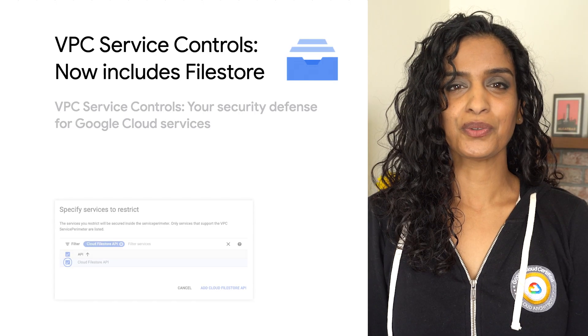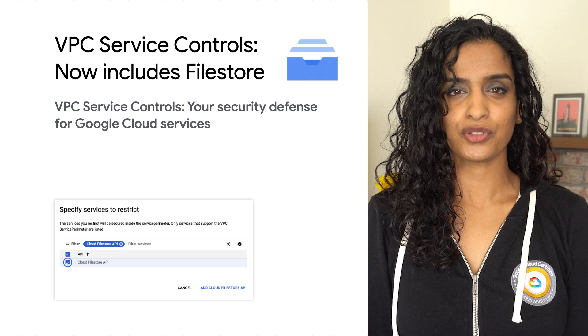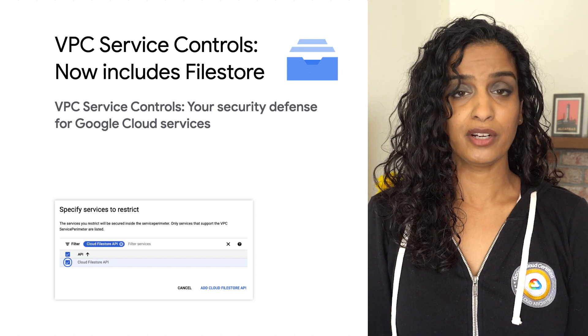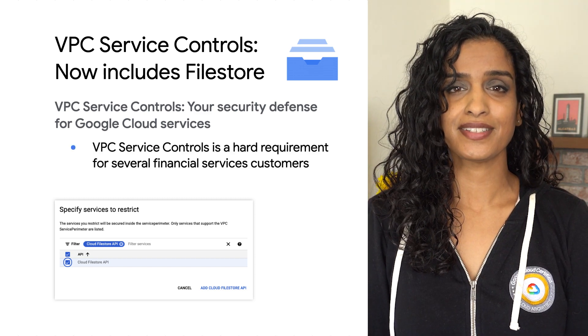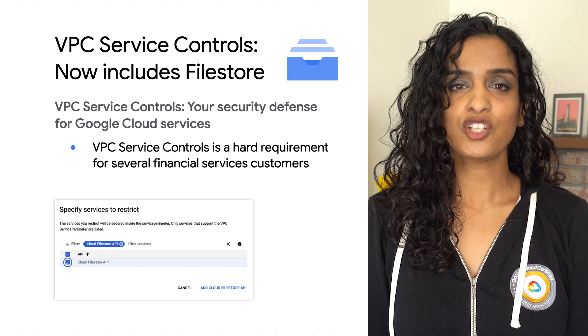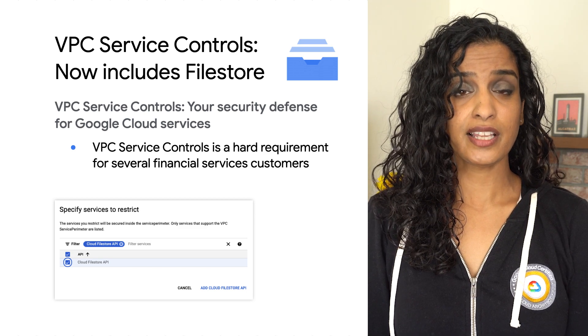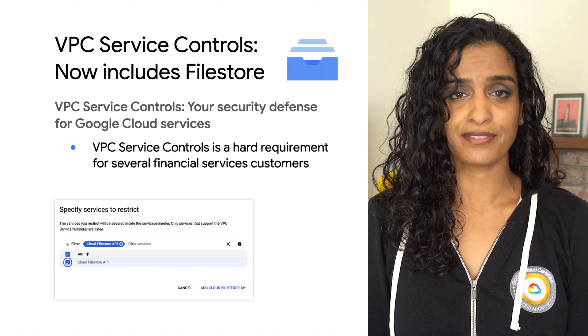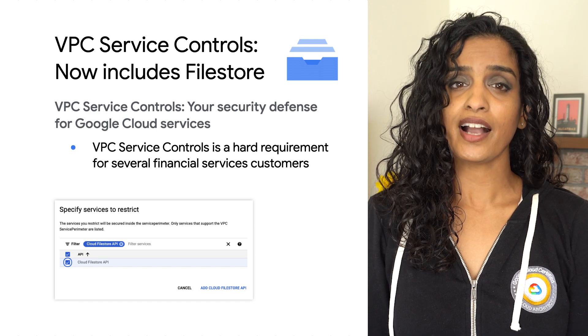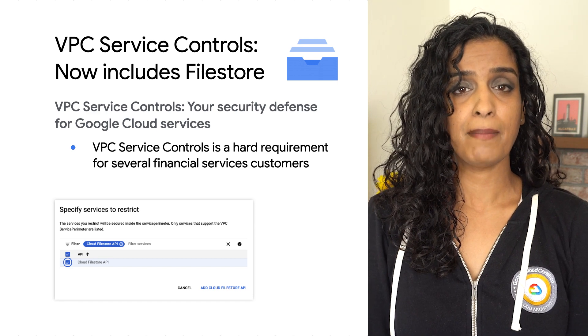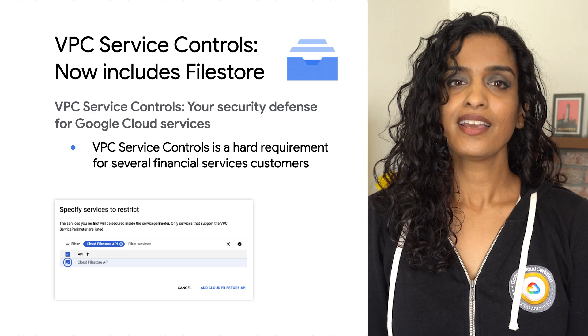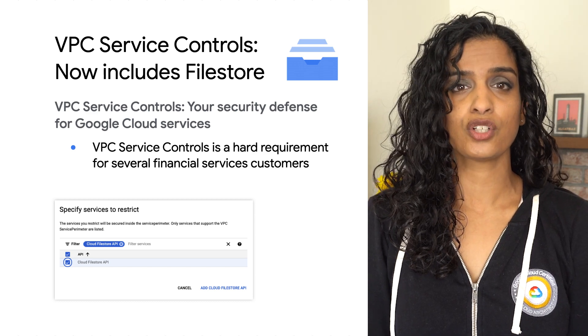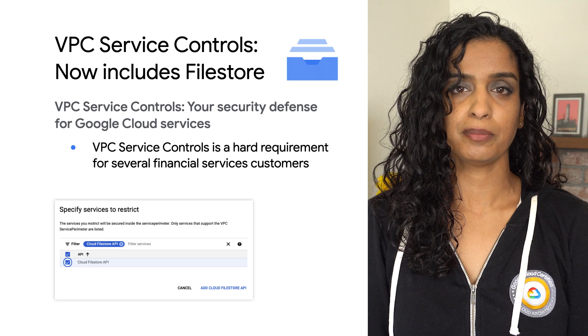Let's talk about additions to VPC Service Controls, your Google Cloud service perimeter defense tool. VPC Service Controls works to prevent data exfiltration and is a hard requirement for several financial services customers. It defines a service perimeter that lets you protect your organization's information by controlling access to resources and managed services data. VPC Service Controls has expanded the services you can include in the service perimeter.